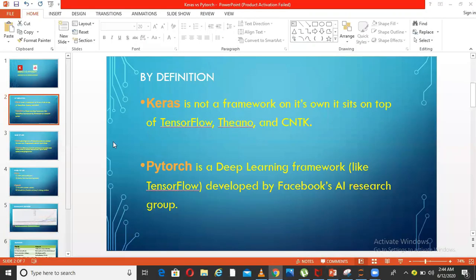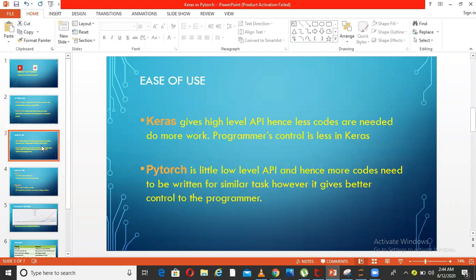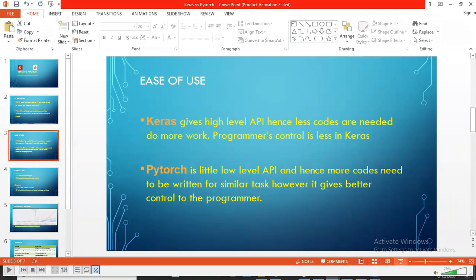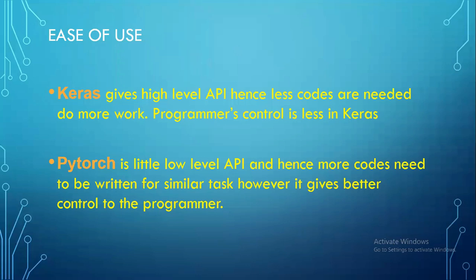What else? If you compare these two libraries, I would say ease of use is a key differentiator. Keras gives a high-level API, hence less code is needed to do more work. In Keras you need to write less code and it will do the job for you, but the programmer's control will be very limited. On the other hand, PyTorch is a lower-level API, meaning you are communicating with the machine at a lower level. You need to write more code — there is no wrapper to help you — but the good thing is you get more control over what you do.